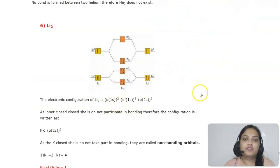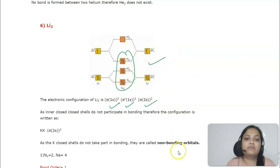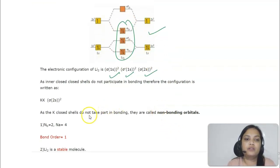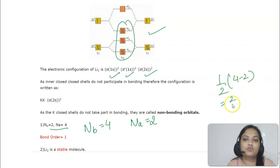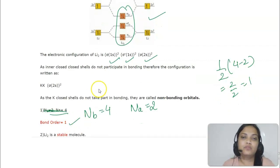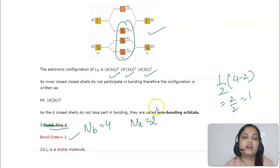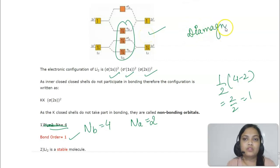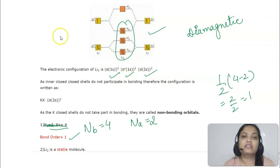For Li2: configuration is sigma1s², sigma*1s², sigma2s². Bonding electrons = 4, anti-bonding = 2, bond order = ½ × (4−2) = 1. Li2 is a stable molecule. All electrons are paired, so it is diamagnetic. Using molecular orbital theory we can determine bond order, stability, bond length, bond type, and magnetic nature (diamagnetic or paramagnetic) of molecules. These are the three theories — VSEPR, Valence Bond theory, and Molecular Orbital theory — discussed in this chapter.